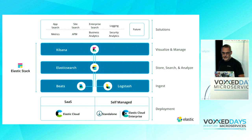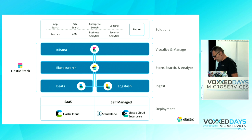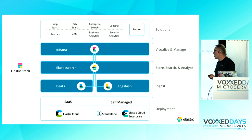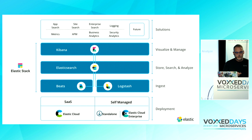Elasticsearch can scale out — you can have petabytes of data indexed inside an Elasticsearch cluster if you wish. On top of that, we have Kibana. Kibana is the front end we use to visualize the data in Elasticsearch. It also provides additional applications on top of Elasticsearch — I mentioned machine learning before, and there is a dedicated application for that running inside Kibana.